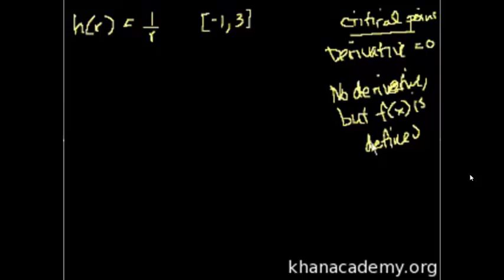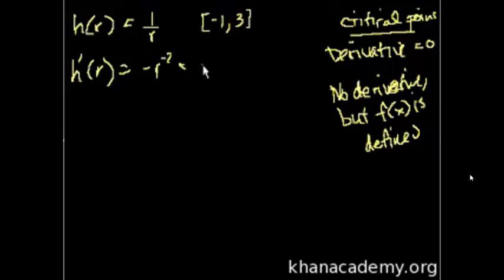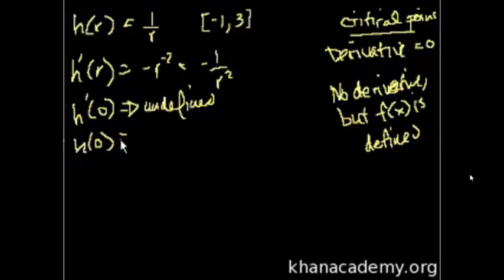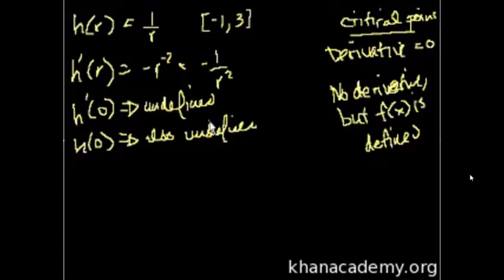What's the derivative? h prime of r — well, that's r to the negative 1, so it becomes negative r to the negative 2, or minus 1 over r squared. Can this ever equal 0? No, it's never going to equal 0. Where is it undefined? It's undefined when r equals 0, and r equals 0 is in that interval. So h prime of 0 is undefined. But h of 0 is also undefined — 1 over 0 is undefined. So this is not a critical point, because neither the derivative nor the function is defined there.